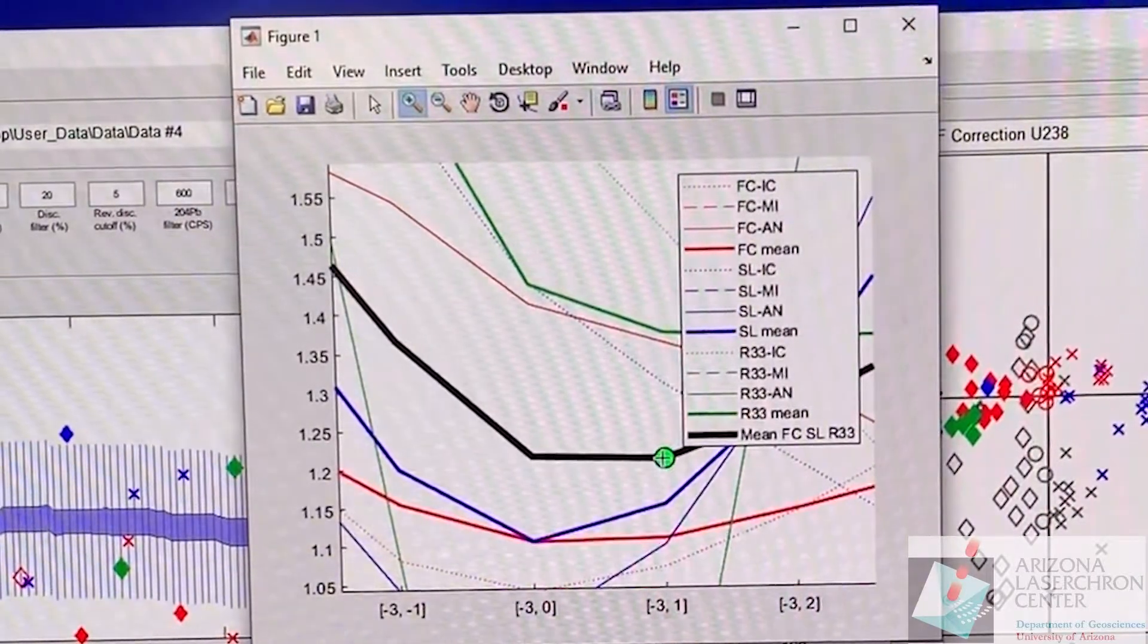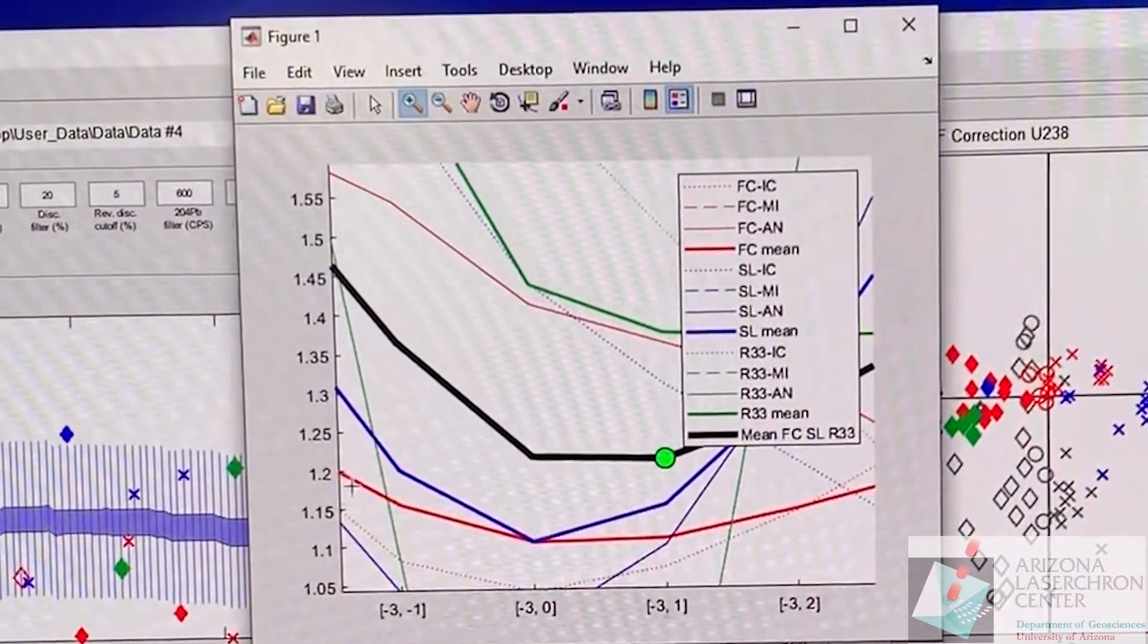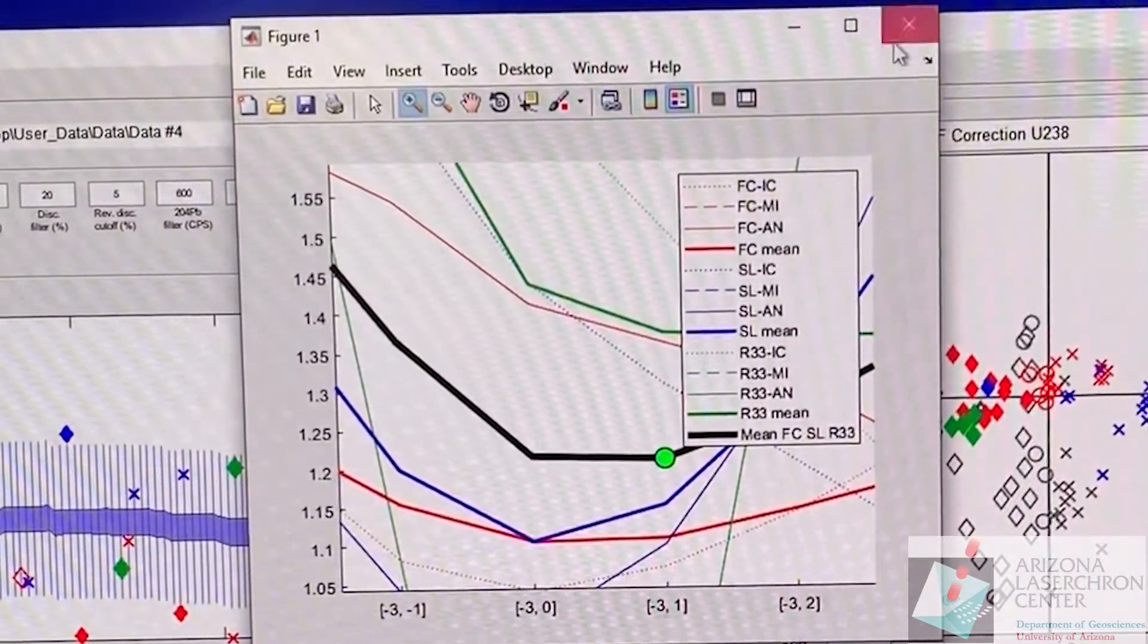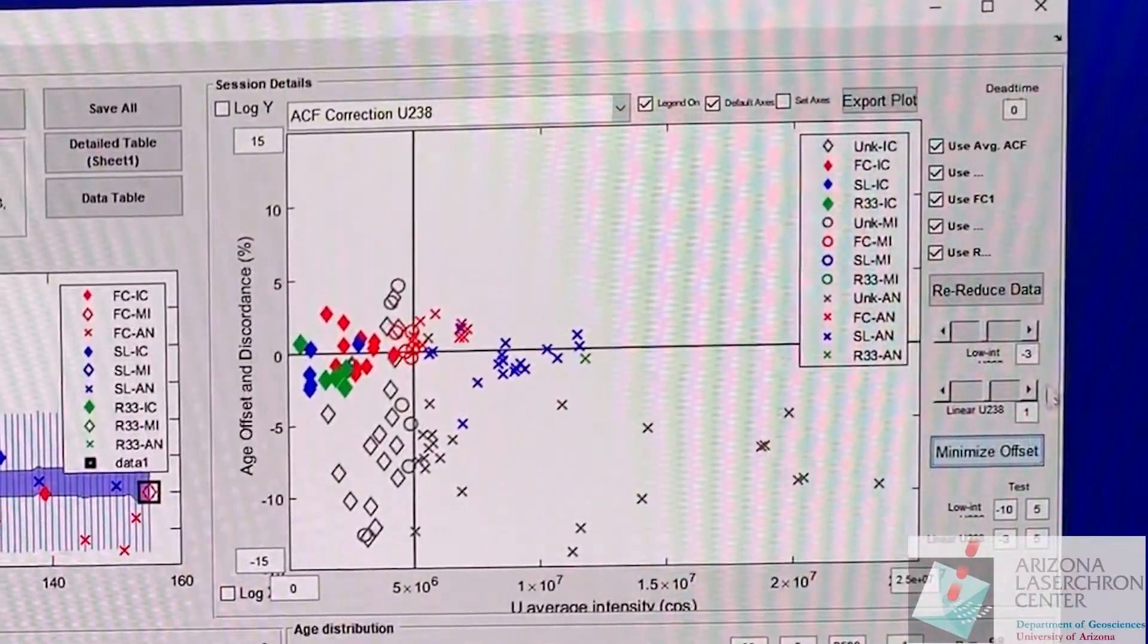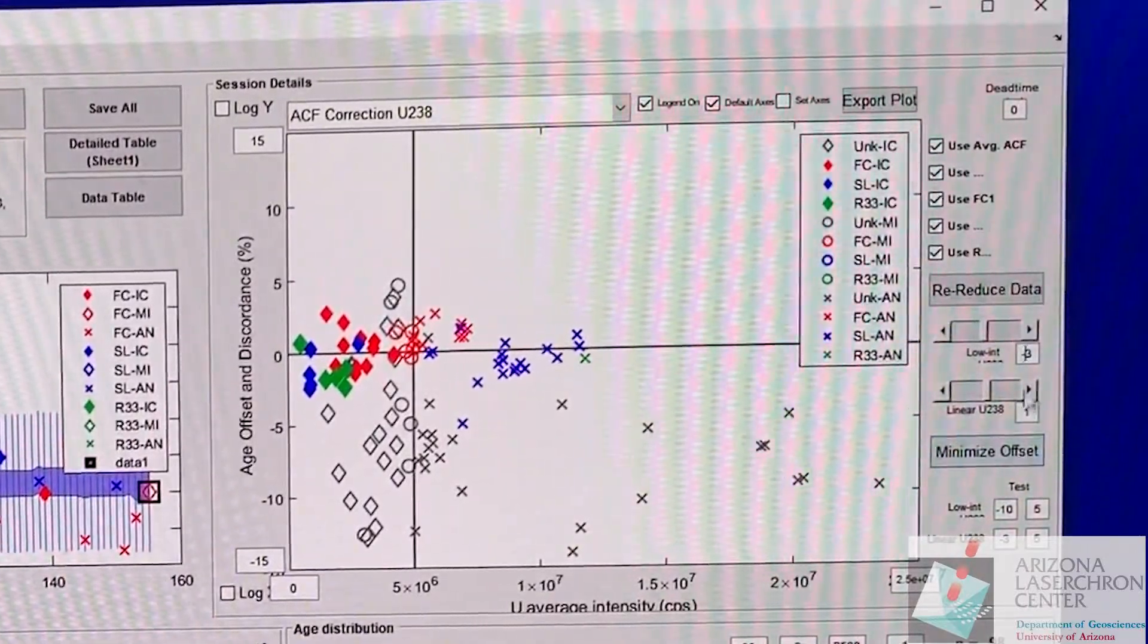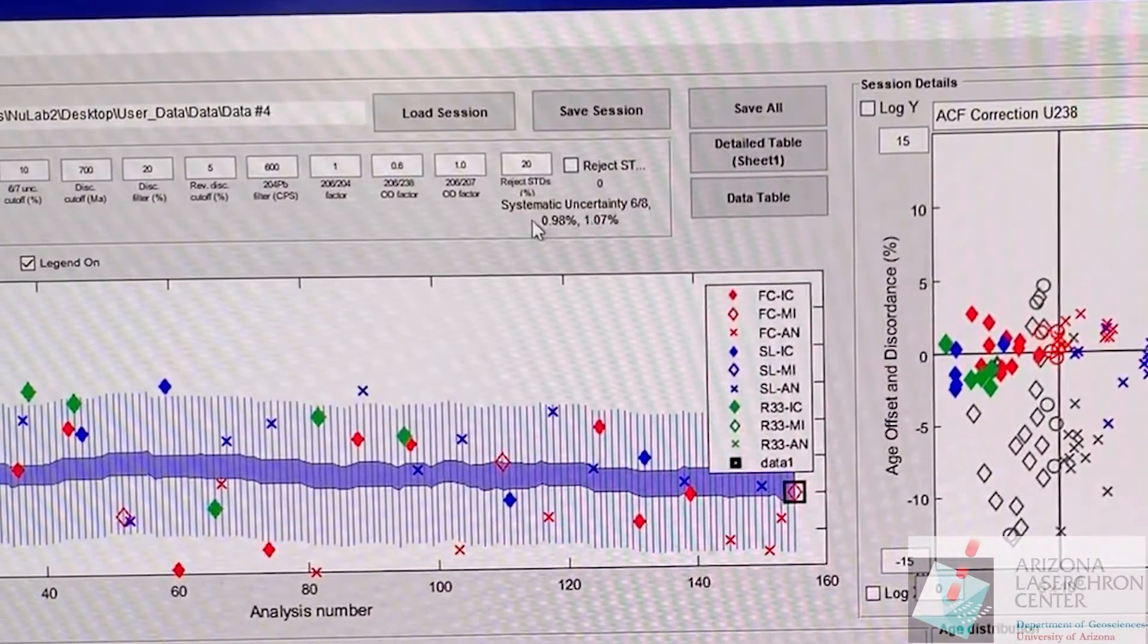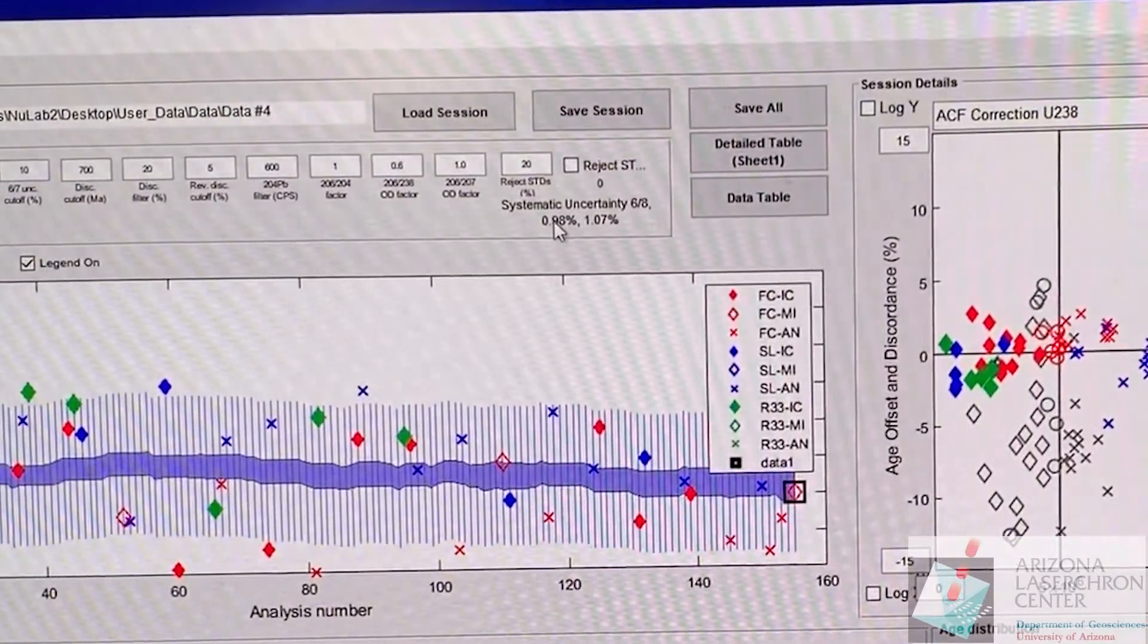It gives you the best offset. We're trying to minimize the offset there. So negative three and one is what is now plotted here. Our systematic uncertainty has decreased yet again. Now we're under one percent. We're doing great.